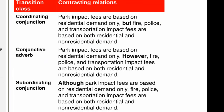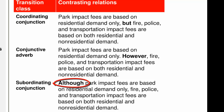Consider how the three classes of transitions might be used to signify the contrasting relation. The first possibility is using a coordinating conjunction like "but" between the two independent clauses, combining them into one complex sentence. The second possibility is using a conjunctive adverb like "however," which is flexible in placement — in this example it appears before the subject slot in sentence-initial position, followed by a comma. The third possibility is using a subordinating conjunction like "although," which creates a subordinate clause, combining the two sentences into one with a comma separating the subordinate clause.